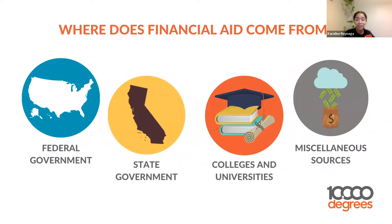Where does all this money come from? There are four main sources: the federal government, state government, colleges and universities, and miscellaneous sources.